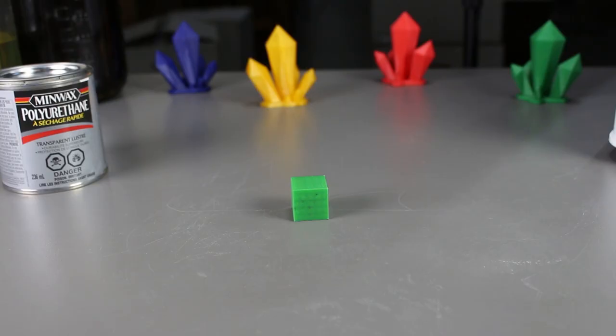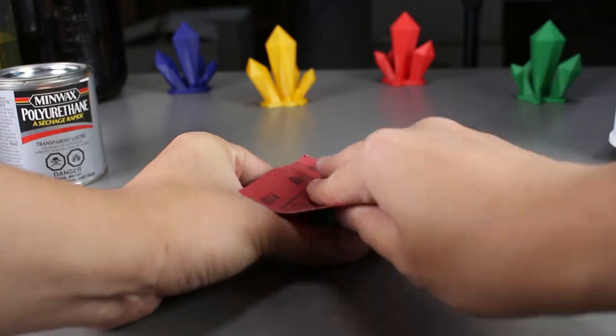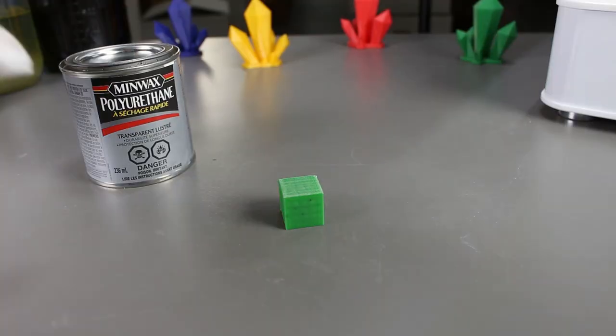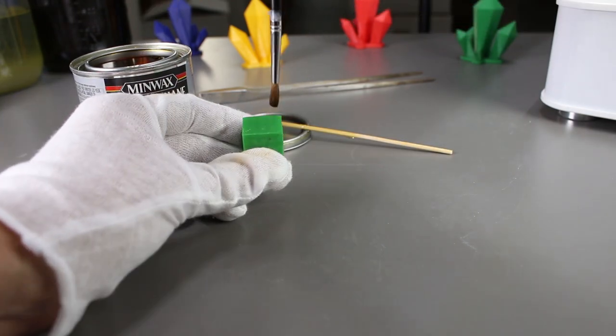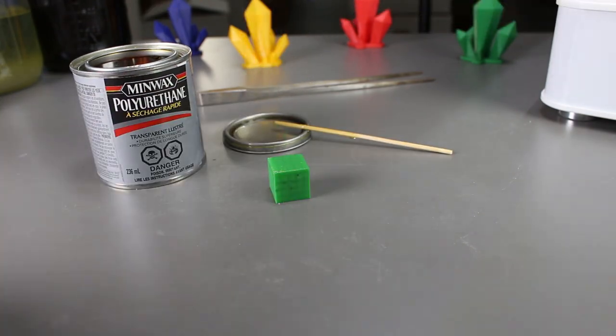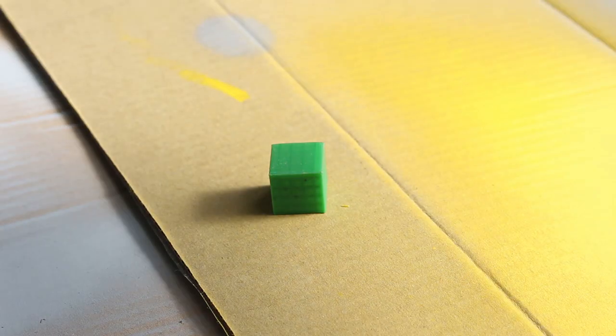While we wait for the first print to dry, we'll take the second print and sand it down with 100 grit sandpaper. We'll wash it off afterwards to clean off the dust and then put another layer of polyurethane on it. We'll let it dry for four hours and then spray a coat of primer.